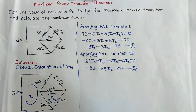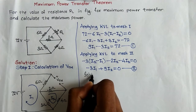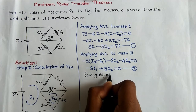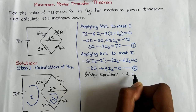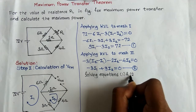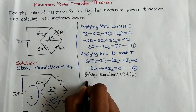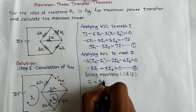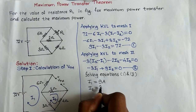Now we have equation 1 and equation 2. Solving these two equations simultaneously, we get I1 equals 9 A and I2 equals 3 A.